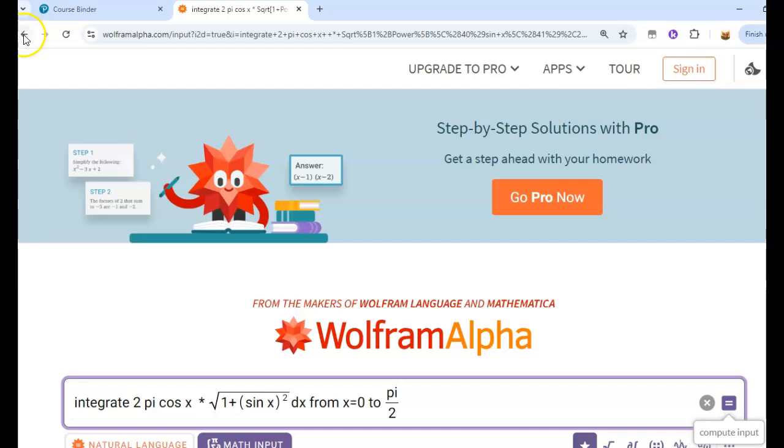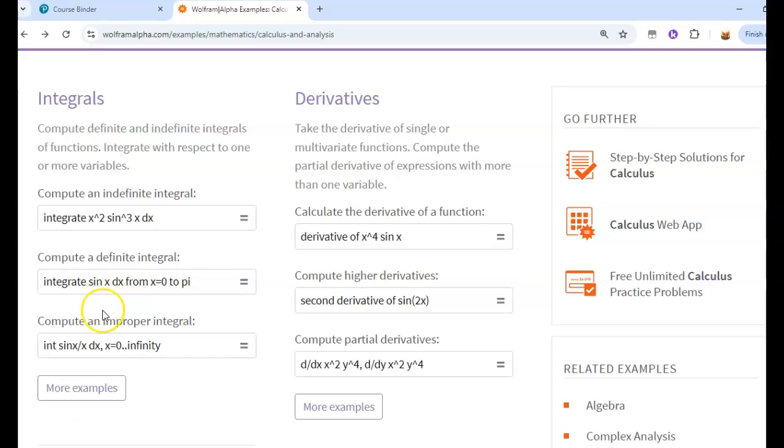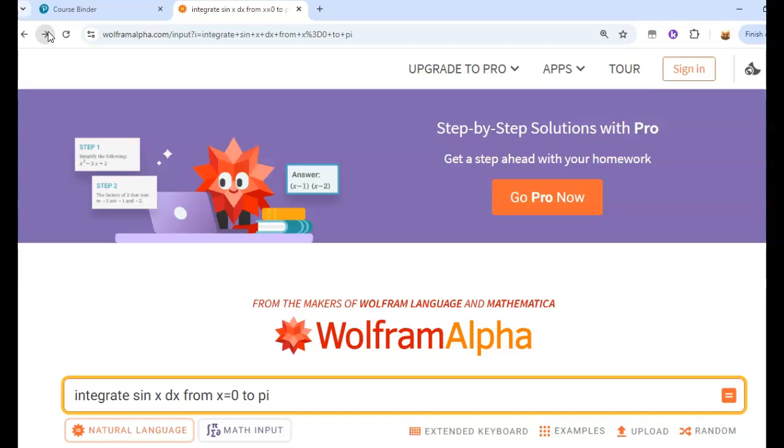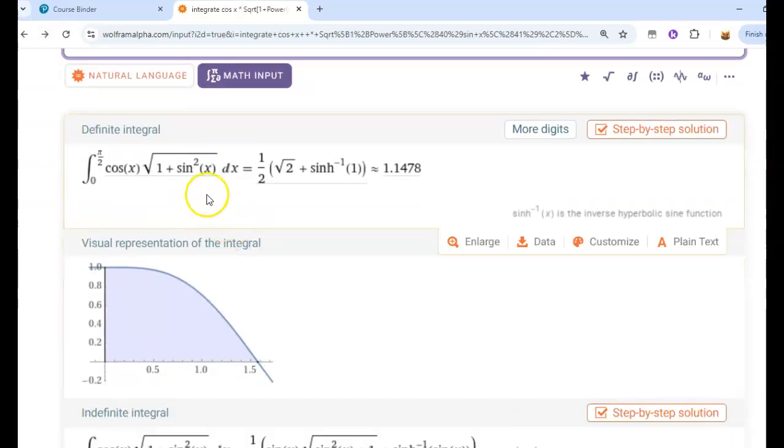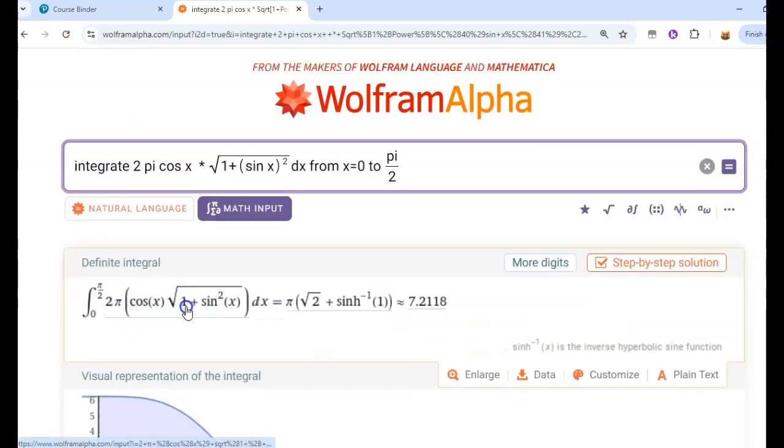I just go to the website Wolfram Alpha and then choose calculus and definite integrals. You can see here it still remembers that I evaluated that problem there and it actually tells you a function, it actually gives you an exact answer. This thing here sinh minus one is the inverse hyperbolic sine function. We might talk a little bit about that later on, but you can see 7.2118 as well.